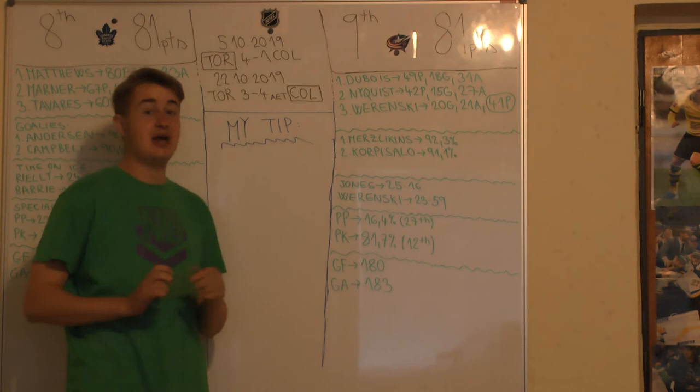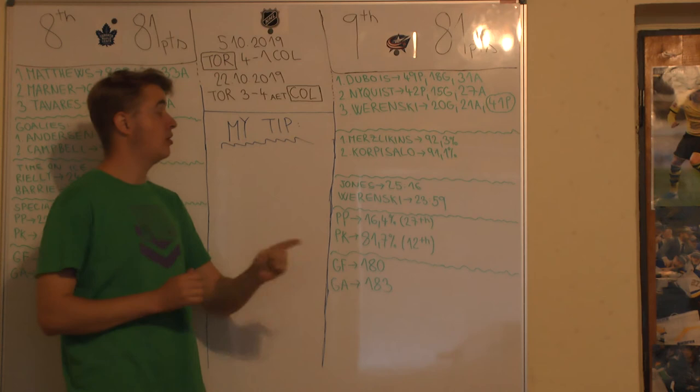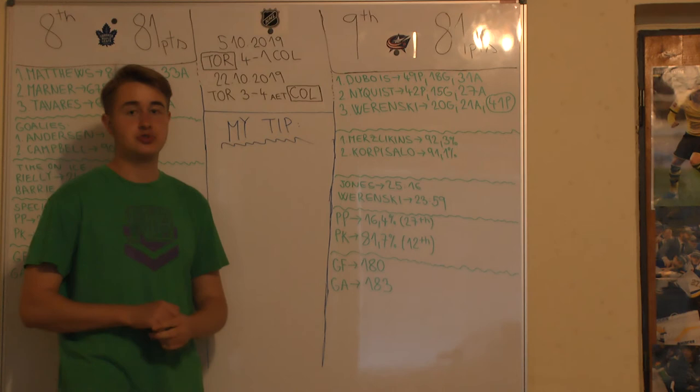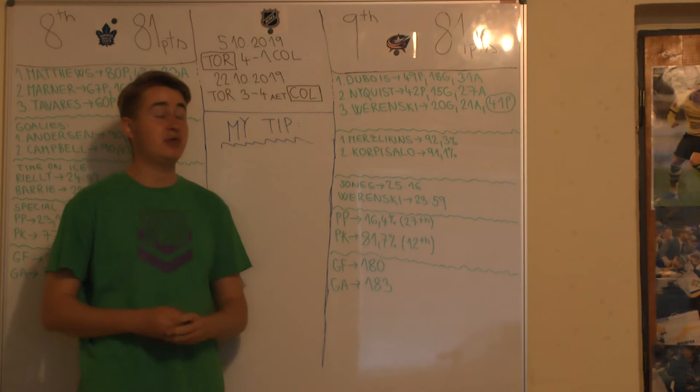So Zach Werenski is the second best goal scorer of the Columbus Blue Jackets. He has scored more goals than, for example, Nyquist or Pierre-Luc Dubois. So that's very interesting. Werenski and his 20 goals, he was very important for Columbus I'm sure. And his goals made a very big impact for Columbus this season.